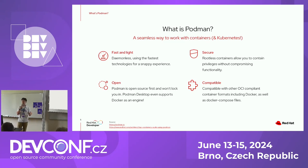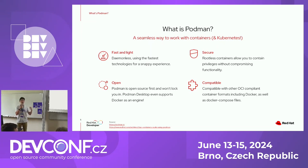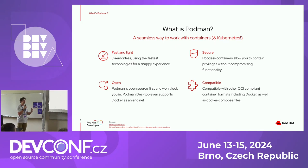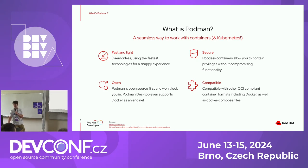Instead of having a background service managing containers, Podman has a fork-exec architecture where the child process becomes the container. Because of that, since Podman 1.0 five years ago, we're able to run containers in a rootless fashion by default — no elevated privileges required. It's also open source at GitHub slash containers, compatible with the OCI standard for images, volumes, containers, and Docker Compose through the Compose spec.